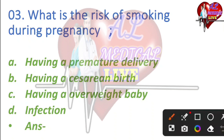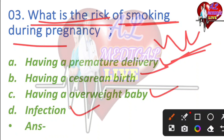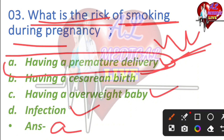What is the risk of smoking during pregnancy? This is a very important question. The options are: A) premature delivery, B) Caesarean birth, C) overweight baby, D) infection. The right answer is A — having premature delivery. Smoking during pregnancy leads to premature delivery.